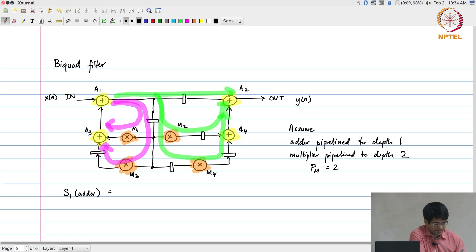So the set S1 for the adder, I am just going to give you this information, is basically going to be a2, a3, a1, and a4. In other words, another way of writing this would be to say that a1 is scheduled at time 2, a2 is scheduled at time 0, a3 is scheduled at time 1, and a4 is scheduled at time 3.